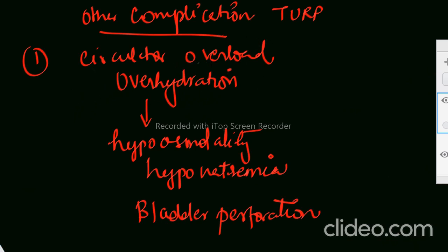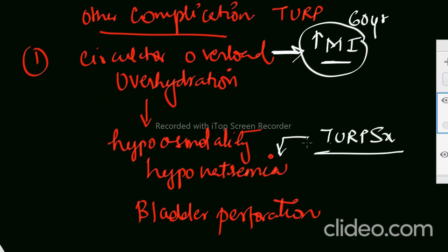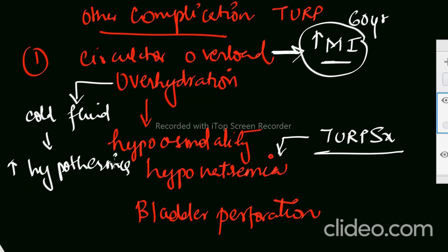And also, actually what we have to remember, that what we have to take care intraoperatively is circulatory overload. So already if the patient is 60 years old, he or she must be having some comorbidities associated. So there is an increased risk of MI in these patients, so you have to judiciously infuse the fluid. There is an increased risk of MI, hyponatremia, hyponatremia can lead to TURP syndrome. And because of the overhydration and also the cold saline or cold glycine irrigation fluid is being used, these patients already are prone to hypothermia, so there is an increased risk of hypothermia in these patients. So intraoperatively all these complications may happen, you have to take care of.